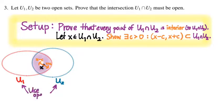You're going to have to use the fact that you know that U1 and U2 are themselves open sets. So every point of U1 is interior to U1, and every point of U2 is interior to U2. If you can connect those two things together, you can produce a C that will show that this X is interior to the intersection.